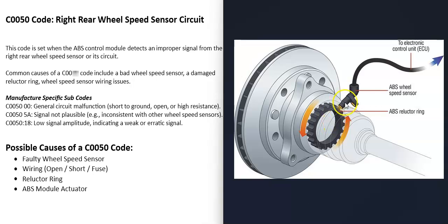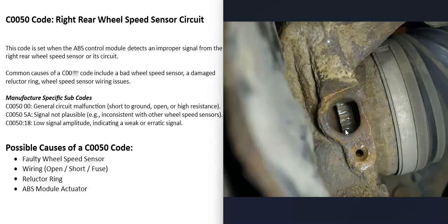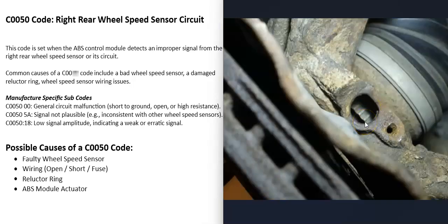The next possible cause is a bad reluctor ring. Inside the axle is what's called a reluctor ring, and it spins with the wheel. Every time one of its notches passes directly in front of the sensor, the sensor picks that up and reports back to the computer. If the reluctor ring gets damaged, the sensor won't be able to read those notches and that's going to cause problems. You can remove the wheel speed sensor, shine a flashlight into the hole, spin the wheel, and check for any damage on the reluctor ring.